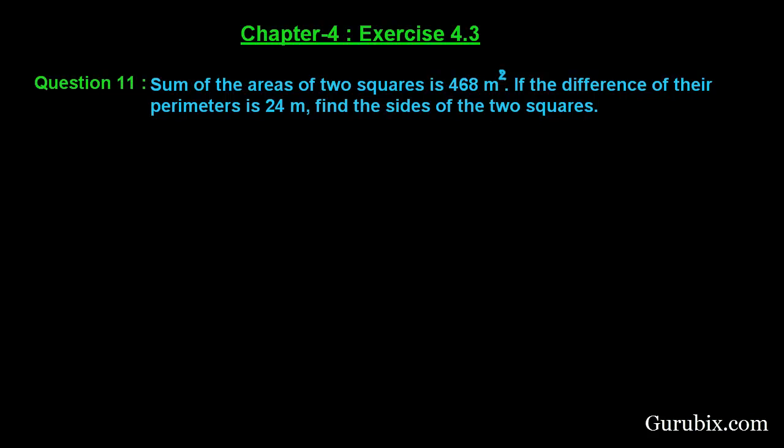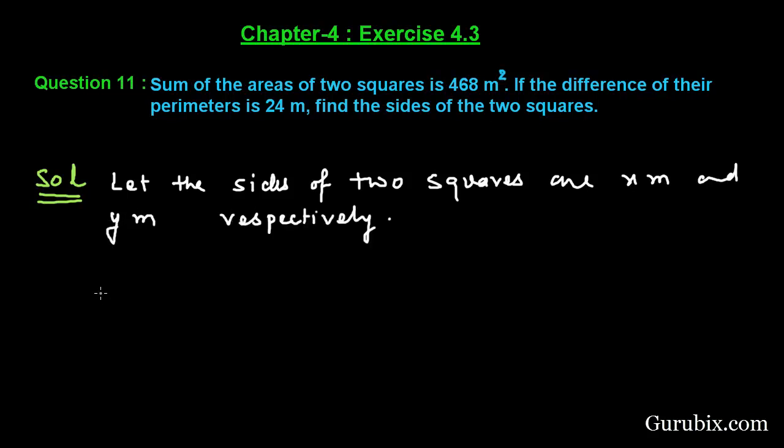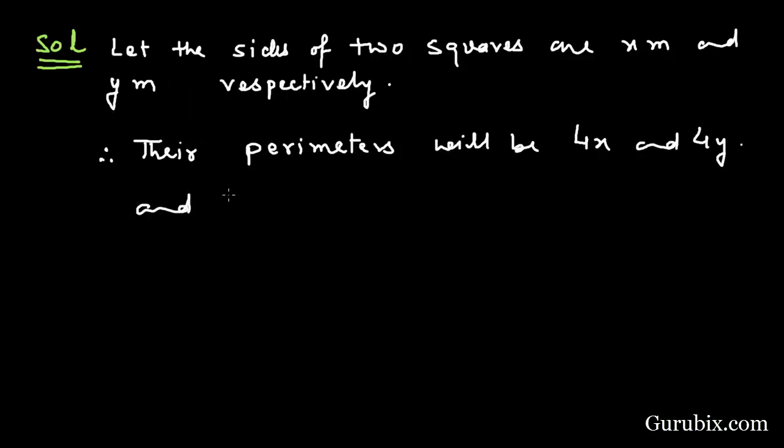Let us solve it. First we shall let the sides of two squares are x meters and y meters respectively. Therefore their perimeters will be 4x and 4y.